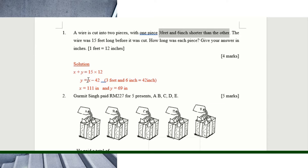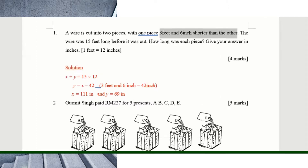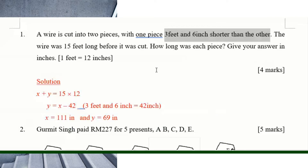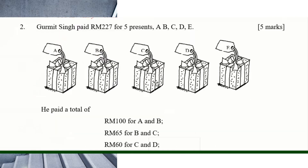You substitute that in: x plus (x minus 42) equals the total length of the wire, and you can find x and y — the length of both pieces. If some of you write x plus x minus 42 equals the total straight away, that's also fine — that's the method we've been using. Make sure you write your units.